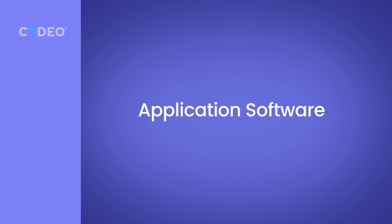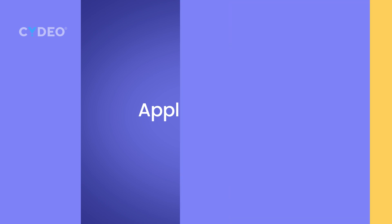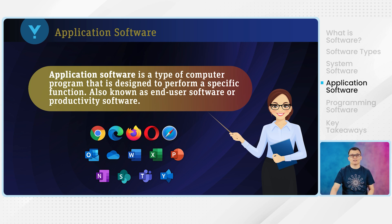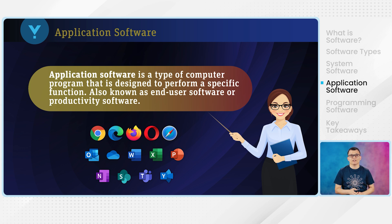Besides system software, another type is application software. Application software is designed to perform specific tasks or functions for the user. Each application software performs a specific task, and they can be pre-installed on the computer or installed later by the user. There are many types, including word processors like Word and Excel, media players, web browsers, and gaming software.